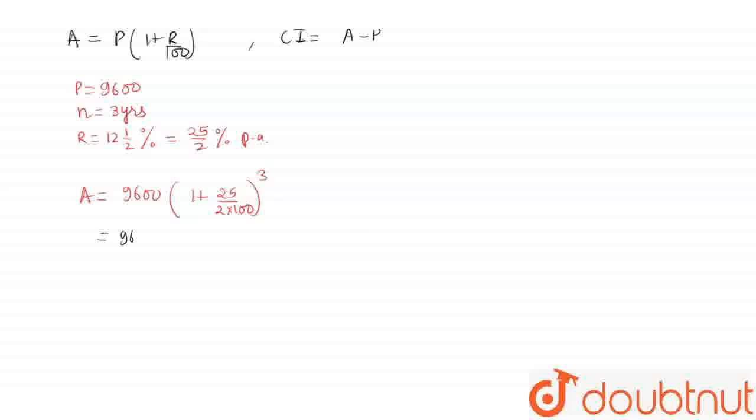This becomes 9600. When 25 is cancelled with 100 by 4, this becomes 1/8. So we get 9600 × (9/8)^3.